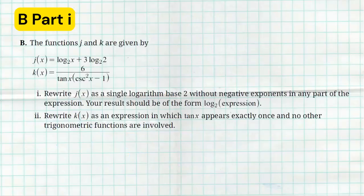Moving on to part B, we were asked to do a little bit of manipulation, a little bit of reducing or simplification with two functions, j and k. Basically, j being a logarithmic function and k being some weird trigonometric function. Let's start off with part one here or part i. They want us to rewrite j as a single logarithm with base two. So we should have log base two and then something inside of that log.